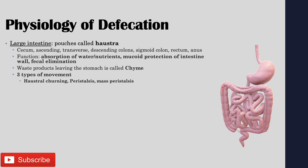From the cecum, the large intestine goes into the ascending colon, the transverse colon, descending colon, sigmoid colon, then the rectum, the anal canal, and the anus. The function of the large intestine is to absorb water and nutrients. It also provides mucoid protection of the intestinal wall by secreting mucus, which contains large amounts of bicarbonate that helps neutralize the acidic contents from the stomach. It also functions in fecal elimination.